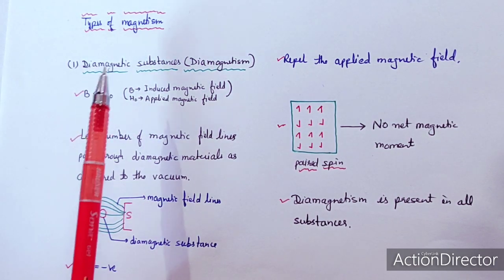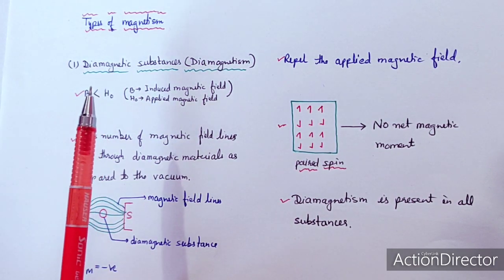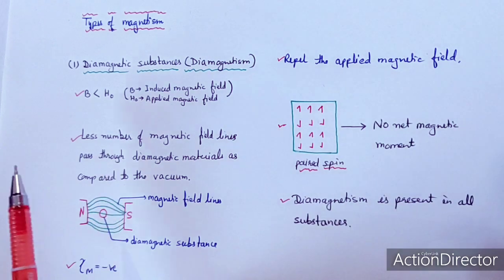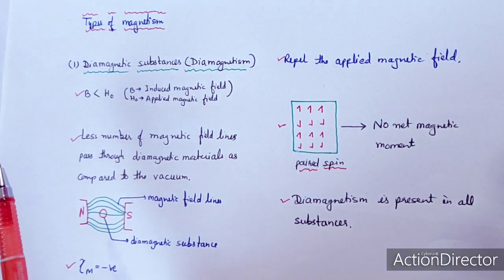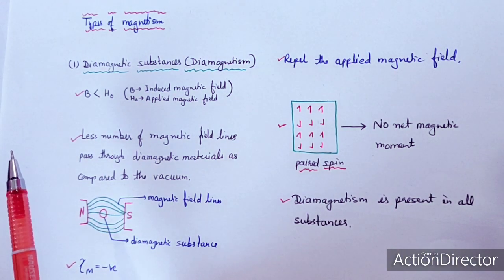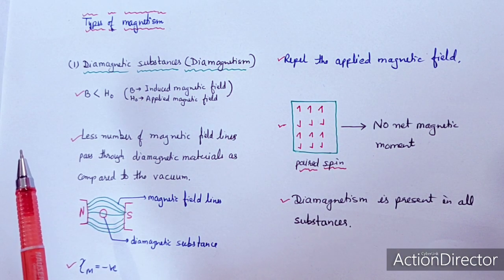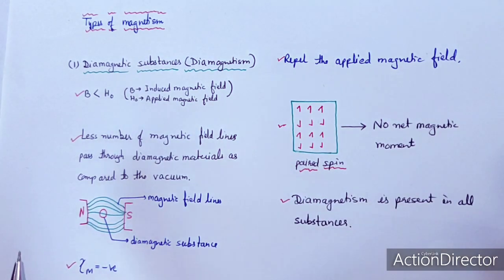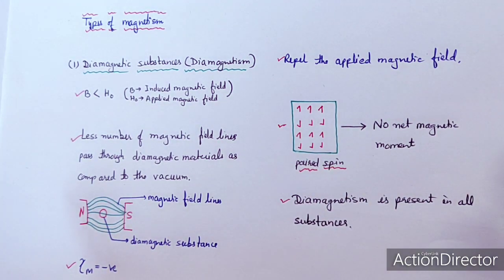Magnetic substances can be divided into five main types: diamagnetic substances, paramagnetic substances, ferromagnetic substances, ferrimagnetic substances, and antiferromagnetic substances. We will discuss them one by one.